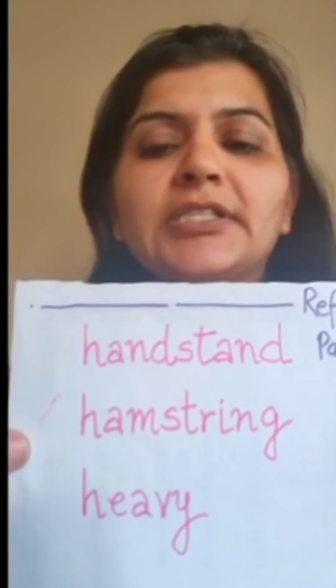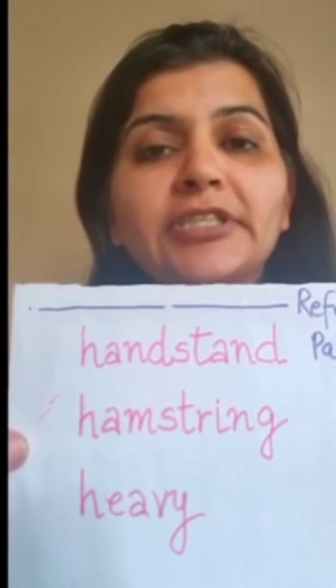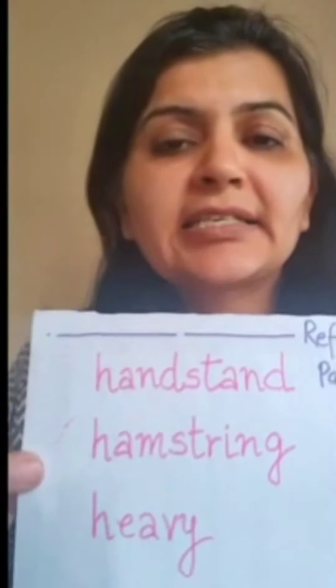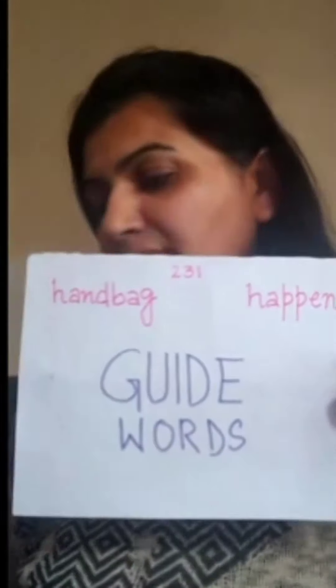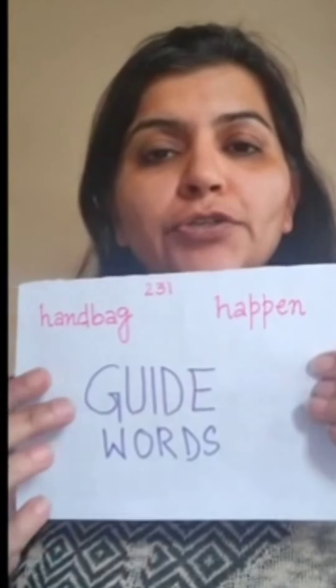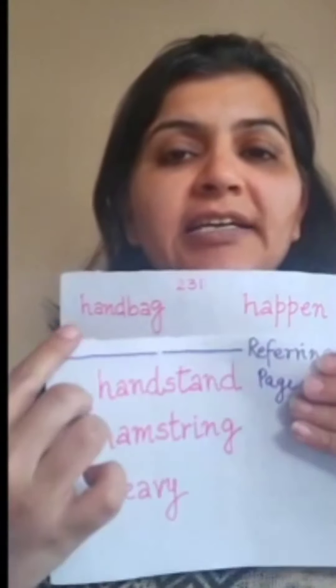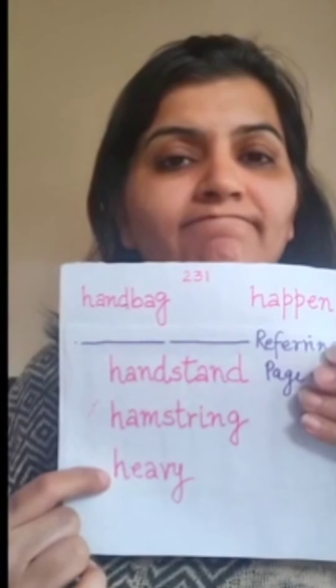Both guide words are on top. When you refer to the dictionary, you will find the first word 'handbag' at the beginning and the last word 'happen' on this page. Now I am going to give you three words — handstand, hamstring, and heavy — and you tell me if these words will be present on this page. Will the word 'heavy' be on this page? Heavy starts with H-E-A, but both our guide words are H-A. So do you think 'heavy' will be on this page? No.